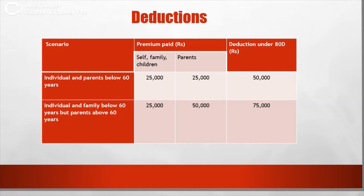If we also pay premiums for parents, we can deduct an extra ₹25,000. That means ₹25,000 plus ₹25,000 as the total premium deduction.